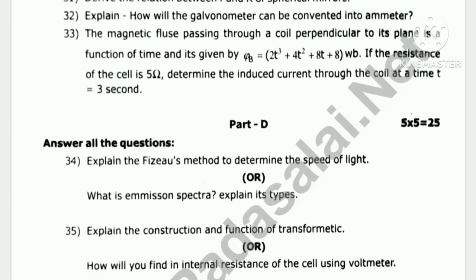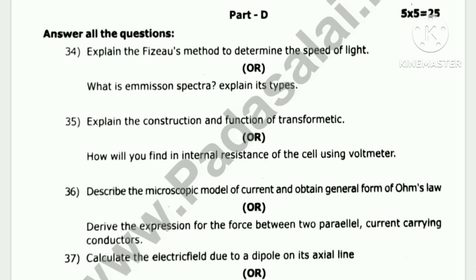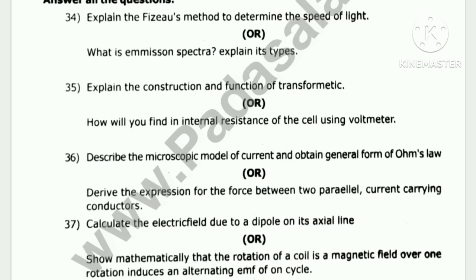Next, Part C — 5 marks each with side-rod choice. Explain the fuse. Use matter to determine the speed of light. What is emission spectrum? Explain its types. Question 35: explain the construction and function of a transformer. How will you find the internal resistance of a cell using a voltmeter?